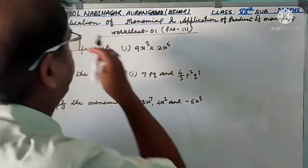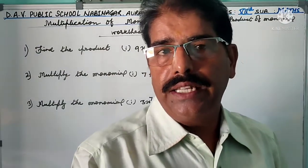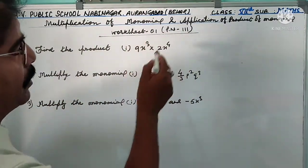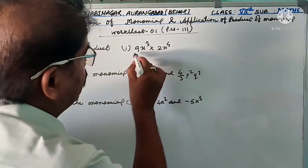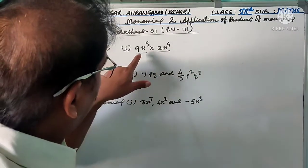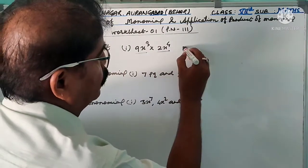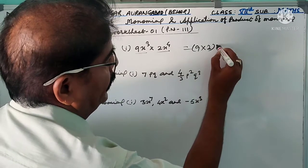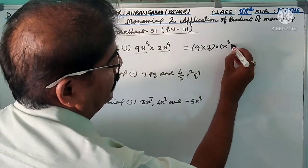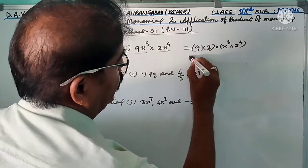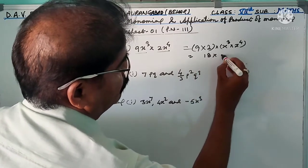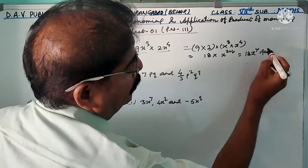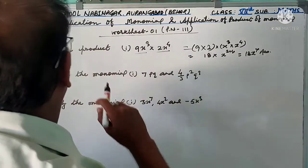Now, multiplication of monomials. An algebraic expression having only one term is known as a monomial. Here are some examples from worksheet one, page number 111. Question one: find the product of 9x³ and 2x⁴ — both are monomials. First multiply the constant terms: 9 × 2 = 18. Then multiply the variables: x³ × x⁴ = x^(3+4) = x⁷. So the answer is 18x⁷. Solve the remaining parts of question one yourself.